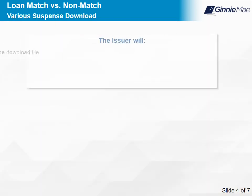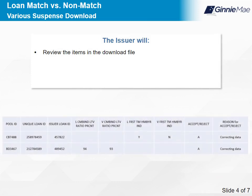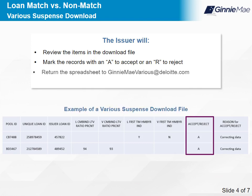The issuer will review the items in the download file, then mark the records with an A to accept or an R to reject. Next, they will return the spreadsheet to GinnieMaeVarious at Deloitte.com no later than the 20th calendar day of the month. Select Next to continue.